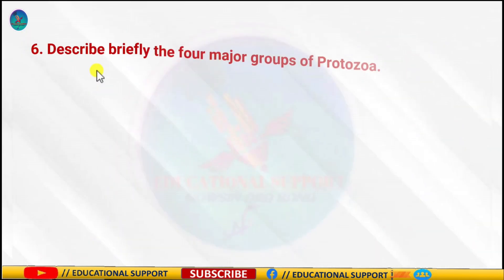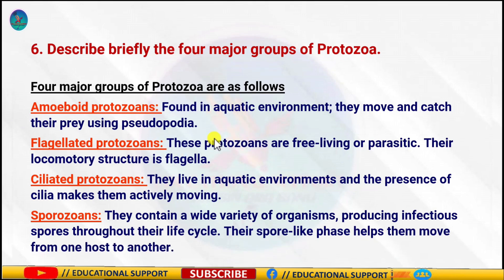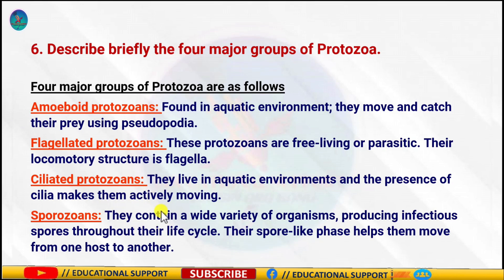Question number six: Describe briefly the four major groups of Protozoa. The four major groups are: amoeboid, flagellated, ciliated, and sporozoa. Amoeboid protozoans are mainly found in fresh water, sea water, or moist soil; they move and capture prey with the help of pseudopodia — for example, Amoeba. Flagellated protozoans have flagella for movement and are either free-living or parasitic; the parasitic forms cause diseases such as sleeping sickness — for example, Trypanosoma. Ciliated protozoans have thousands of cilia all over the body, which help in locomotion and stirring of food into the gullet — for example, Paramecium.